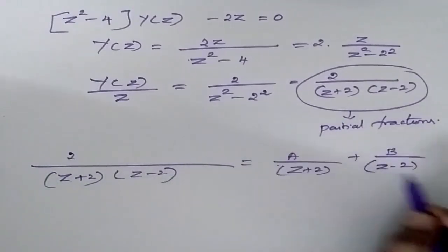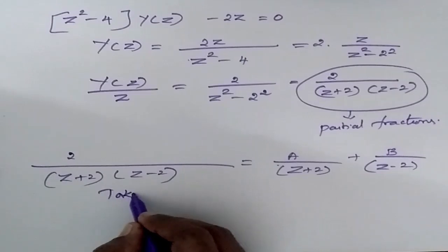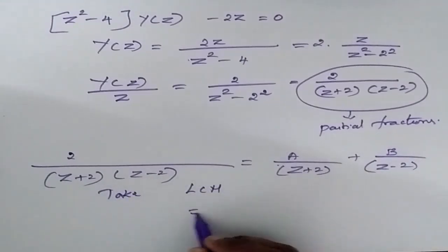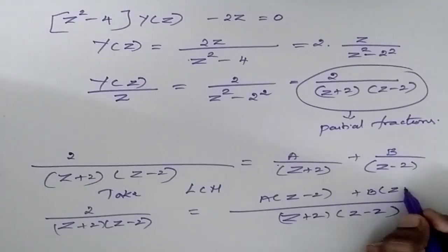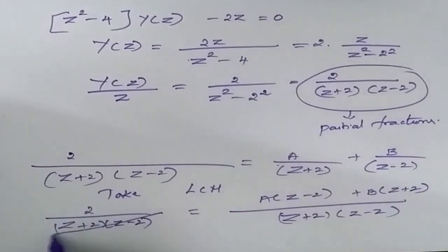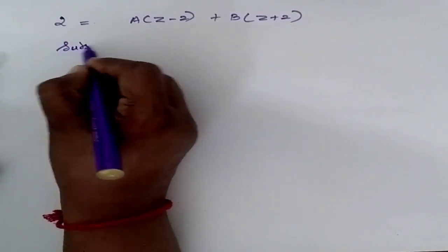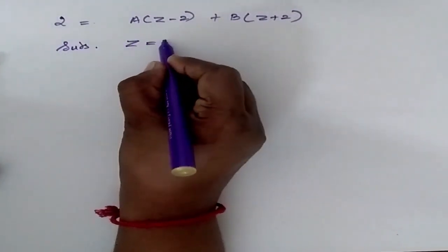Now this is equal to 2. Take LCM and simplify. So now I can cancel the denominators.